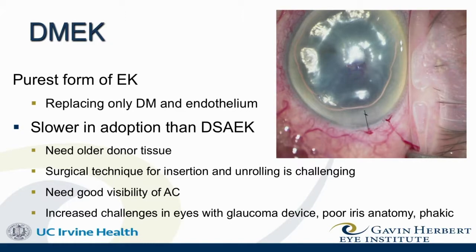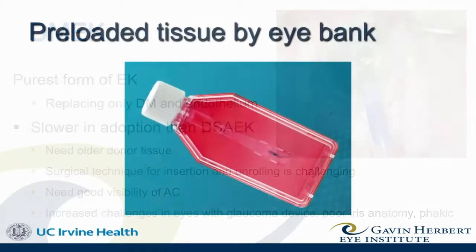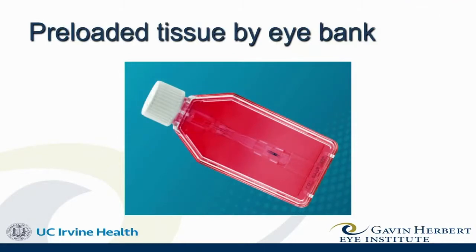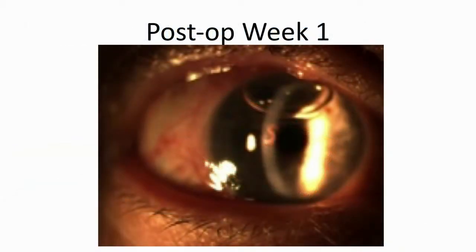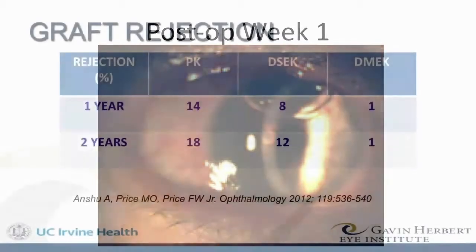These are the areas where we think DSEK still has a role. Tissues now are preloaded, pre-punched, pre-stamped, and pre-stained. This has really taken the difficulty out of the surgeon's hands and put it in the hands of eye bank technicians who handle tissue day in and day out and provide excellent quality tissue to the surgeon. Now we inject them, open them up, and we get visual results with DMEK as early as week one — the cornea is absolutely clear and the patient has 20/20 vision.